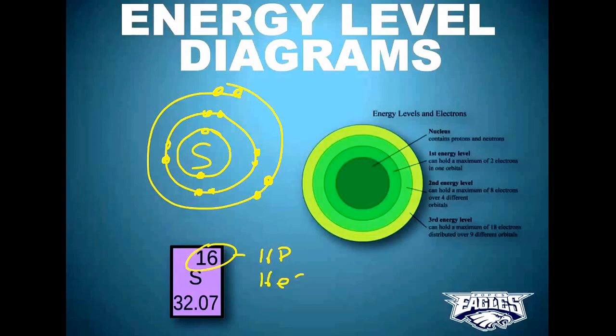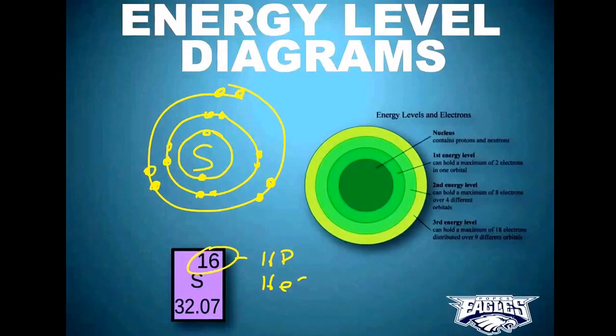We've got to put six more in this outer level here. One, two, three, four, five, six. It's really a pretty easy process. You just start in the middle. You find out how many electrons you have total. You start in the middle, and you just keep adding until that level is full. And then, when that level is full, you move to the next level, and to the next level, and so on and so forth. That's what the one for sulfur would look like.